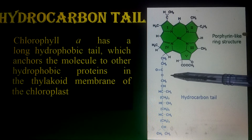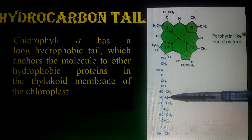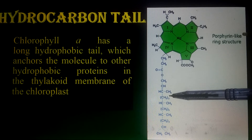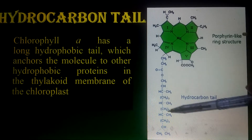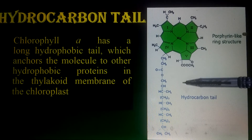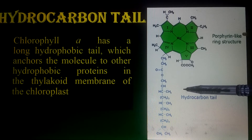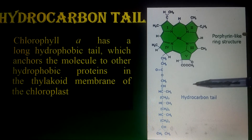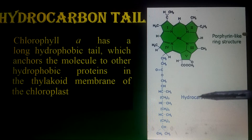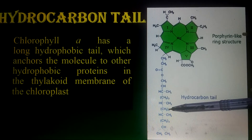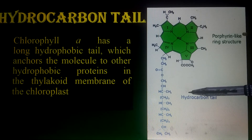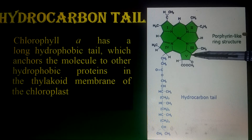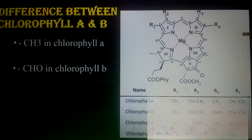This is the hydrocarbon chain, which is hydrophobic. Chlorophyll a has a long hydrophobic tail which anchors the molecule to other hydrophobic proteins in the thylakoid membrane of the chloroplast. This holds down the porphyrin ring in the thylakoid membrane. The thylakoid membrane is a lipid bilayer membrane with many proteins, and this hydrophobic tail interacts with those hydrophobic proteins to anchor the porphyrin ring in the thylakoid membrane.